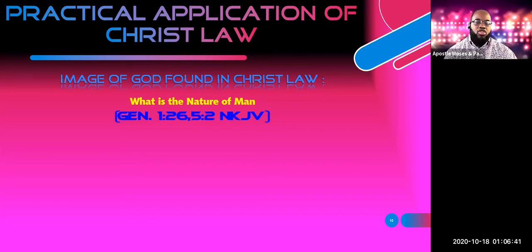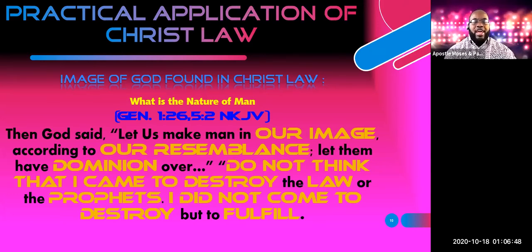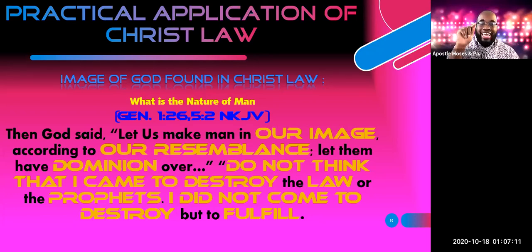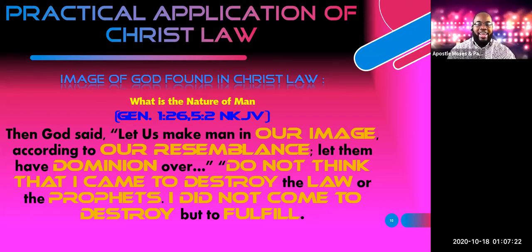In Genesis 1:26 and Genesis 5:2, God said, 'Let us make man in our image according to our resemblance.' Let them have dominion — kingdom. So the nature of man is godly image, godly resemblance, and kingdom. Three things define the nature of man.